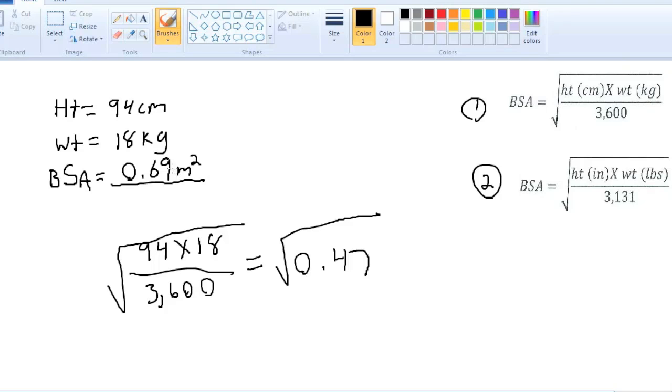Again, just press that square root button right after. And then your final answer should be 0.69 meters squared. Just remember, this is rounded to the second spot, which is the hundredths. Make sure you round it. That's why it's 69.